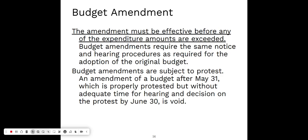To amend the budget, you would hold another hearing, give notice not less than 10 and no more than 20 days prior to the date of that hearing, let the public come and speak to the amendment, and then your board would render a decision on the amendment itself. Amendments, like budgets, are subject to a protest. If you amend really close to the end of the fiscal year — after May 31st — there's a good chance there would not be time for the State Appeal Board to hold a hearing and render a decision within 30 days, which would essentially make your budget amendment void.